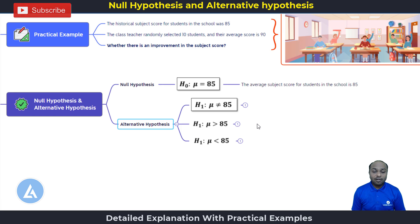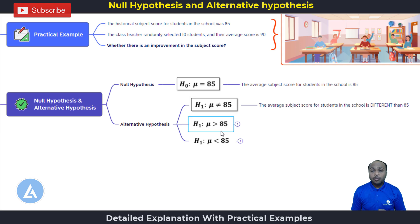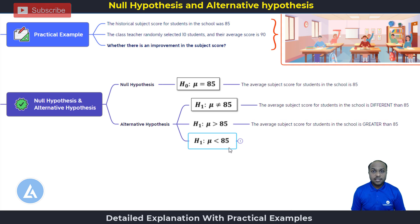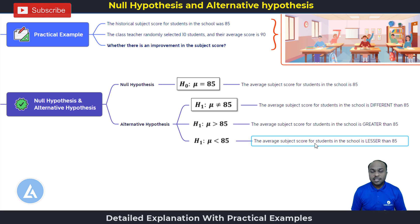There are three types of alternative hypothesis. The first one is H1 colon mu is not equal to 85, meaning the average subject score is different than 85. The second alternative hypothesis is H1 colon mu is greater than 85, meaning the average subject score is greater than 85. The third is H1 colon mu is less than 85, meaning the average subject score is lesser than 85. Depending on the situation, we select the appropriate alternative hypothesis. If we want to check significant difference, use the two-sided test; if we want to check greater than or less than, use the one-sided alternative hypothesis test.